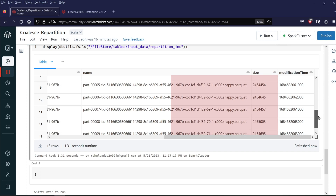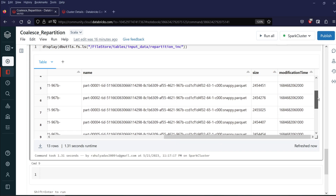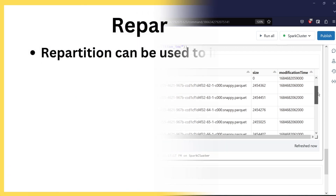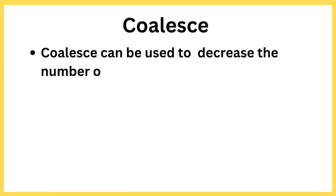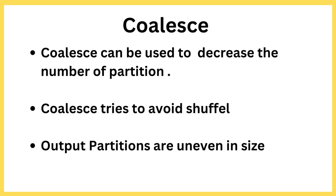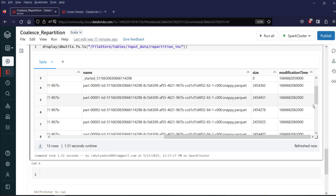By this example, we can conclude that repartition can be used to increase or decrease the partition, but is mostly used to increase the number of partitions. Shuffle will be involved in repartition, and repartition tries to create partitions which are similar in size. Whereas coalesce can be used only to decrease the number of partitions, and the output of coalesce can be uneven in size. If you have any questions, let me know in the comment section. Do hit the like button and subscribe for more such videos. Thank you!